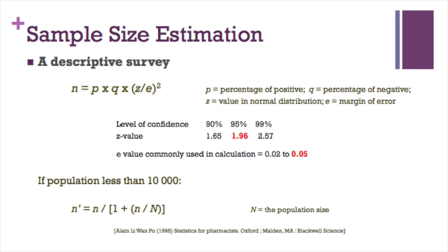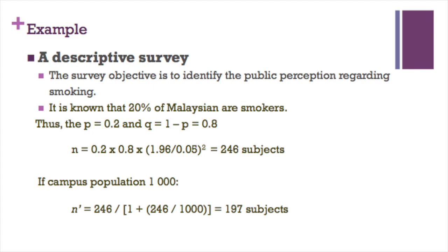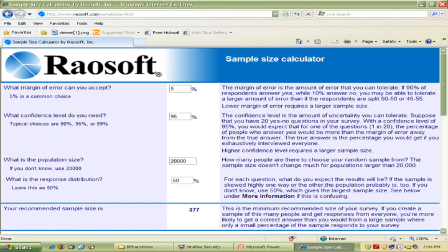For example, the survey objective is to identify the public perception regarding smoking. It is known that 20 percent of Malaysians are smokers, thus p equals 0.2 and q equals 0.8. A survey on general public will require 246 subjects. If only for campus population, only 197 subjects will be required. Online sample size calculators such as Raosoft can also be utilized. This application is also applying similar equations as described before.